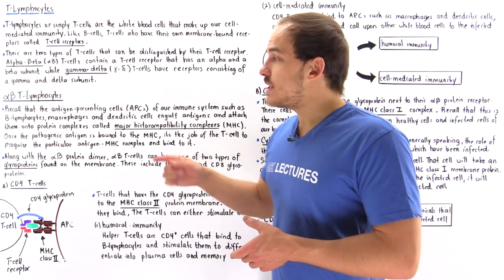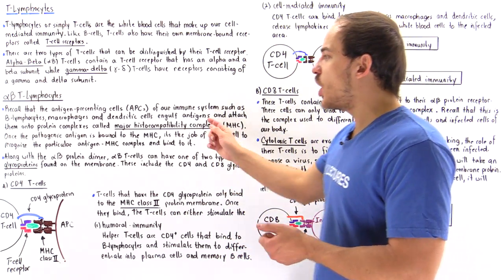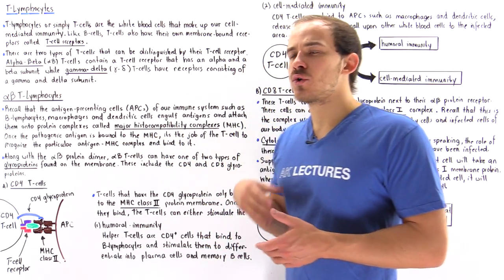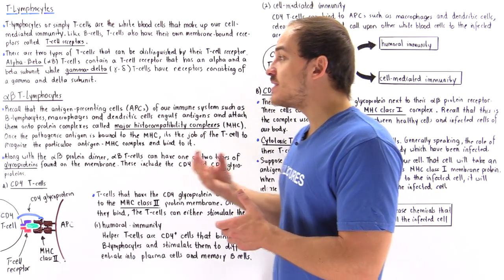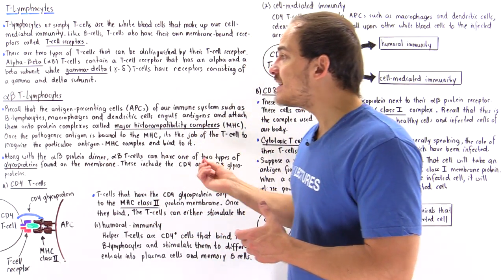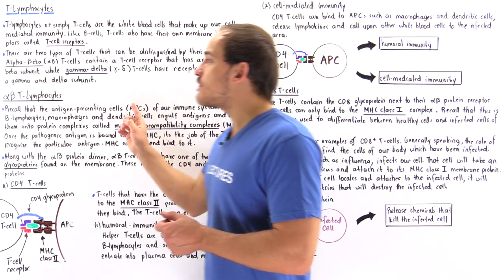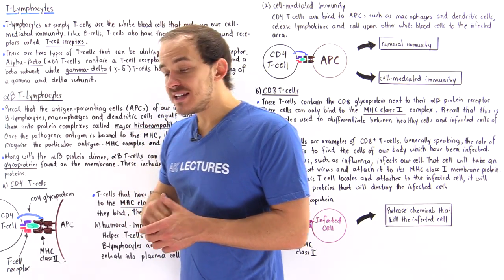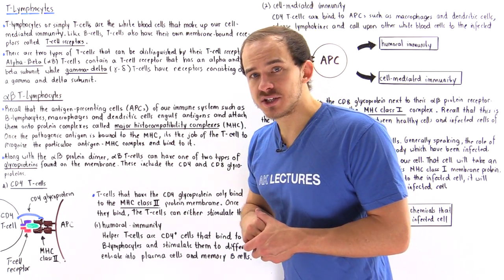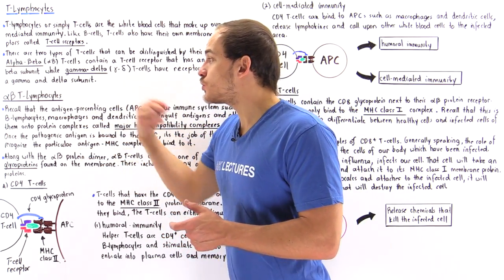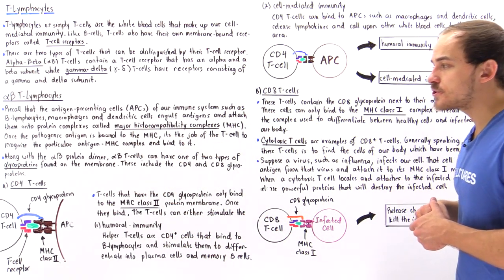These antigen presenting cells contain protein complexes on the membrane known as the major histocompatibility complex, and what these protein complexes do is they are capable of binding the antigens that the cells actually engulf. The role of the alpha-beta T lymphocyte is to bind to these antigen-MHC complexes once the antigen presenting cell engulfs that antigen and places it onto that MHC.